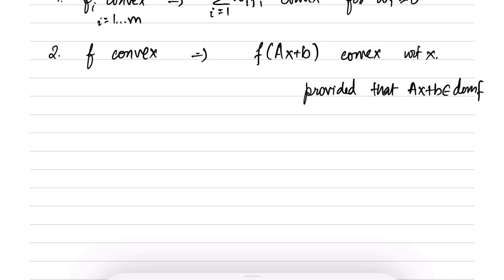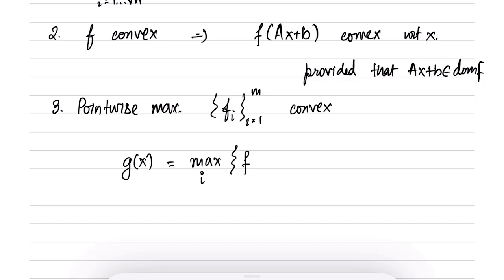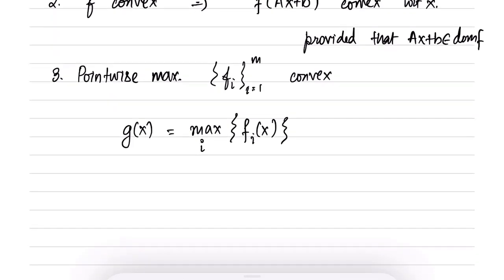The third operation is pointwise maximum. This one is slightly non-trivial and requires some effort to appreciate. The result says: suppose f_i is a set of functions, i = 1 to m, which are all convex. Then g(x) defined as max_i f_i(x) — the pointwise maximum — assigns to each x the maximum value among the f_i's, and this function g is also convex.